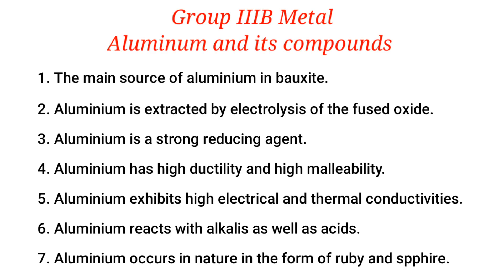Aluminium and its compounds. Number 1: The main source of aluminium is bauxite. Number 2: Aluminium is extracted by electrolysis of the fused oxide. Number 3: Aluminium is a strong reducing agent. Number 4: Aluminium has high ductility and high malleability.